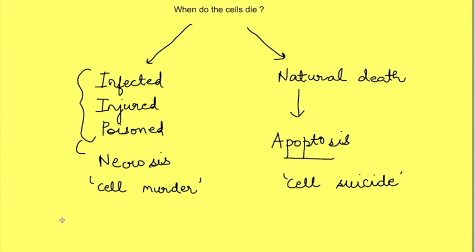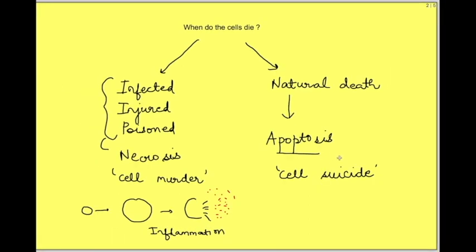In necrosis, damaged cells swell and rupture so that their contents are released outside, and these contents can act on other normal cells and cause inflammation. However, apoptosis — the cell suicide — is a kind of silent death where the cell dies virtually unnoticed and the contents are not released into the surroundings. So there is no inflammatory reaction.